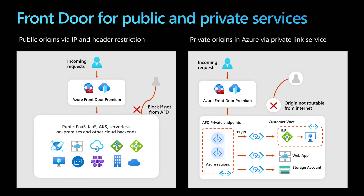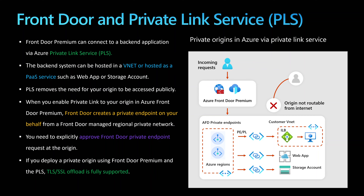Azure Front Door can route traffic for publicly exposed applications through public endpoints — IP addresses or FQDNs — but it also supports private services. This works with services like Cosmos DB, App Service, API Management, Application Gateway, Internal and Public Load Balancers, VMSS, AKS Clusters, and on-premise networks. With PLS — Private Link Service — you can publicly expose your private service using Private Link Service and Private Endpoint.